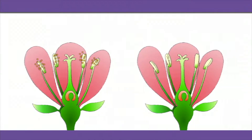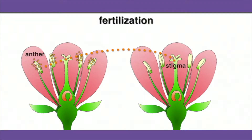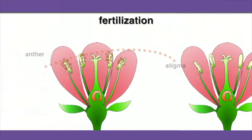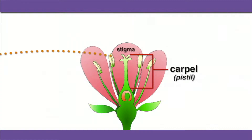As a result of pollination, pollen is transported from the anther of one flower to the stigma of another. Pollination culminates in fertilization. When a pollen grain arrives on the stigma at the top of the carpel, it stimulates formation of a pollen tube along the style.